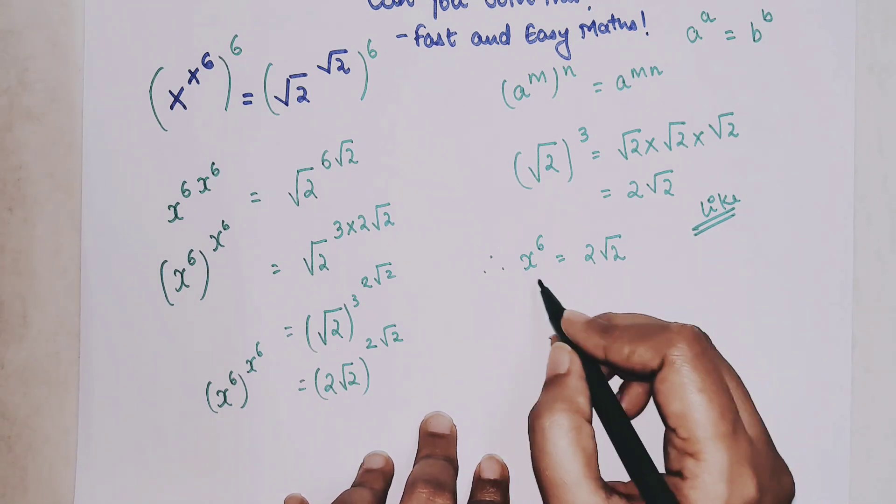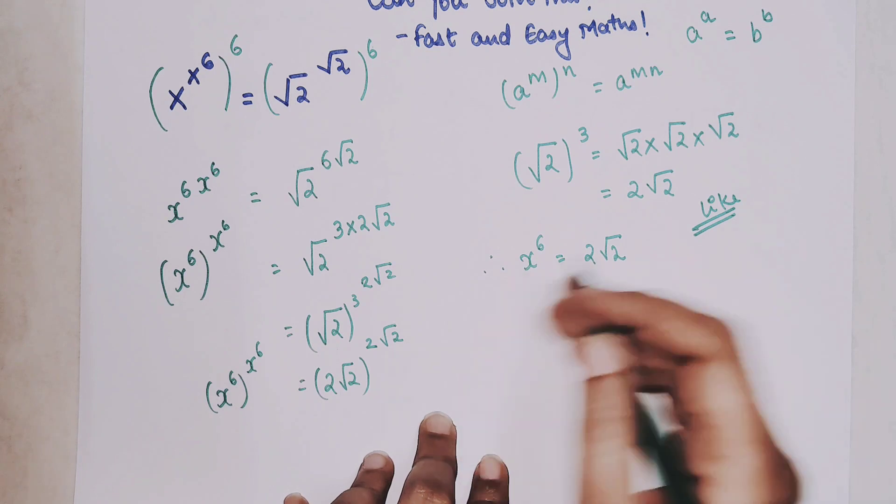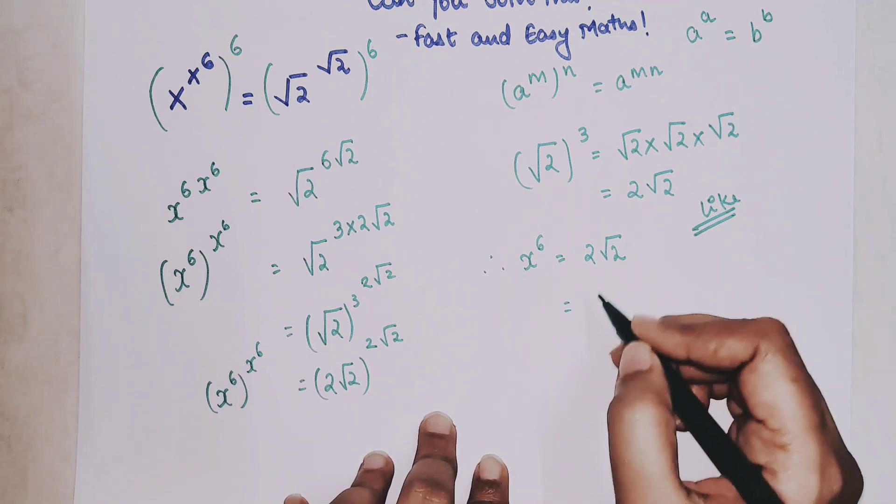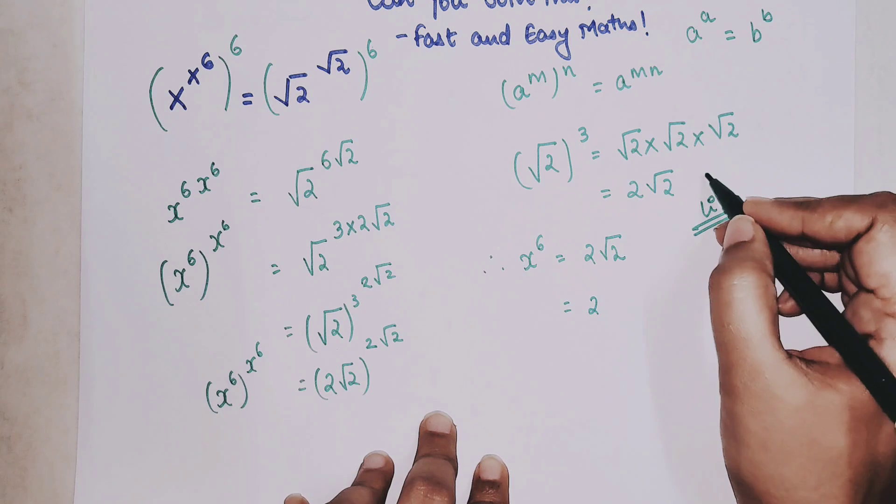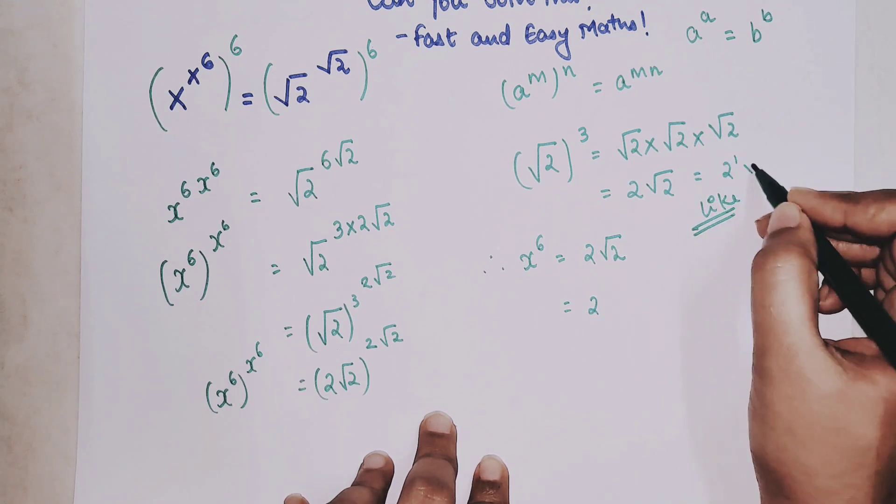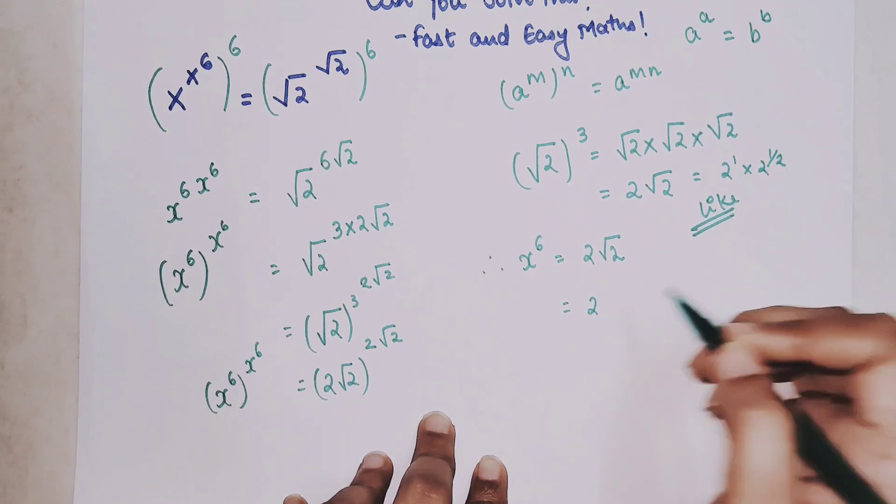Now please understand taking the 6th root, before taking the 6th root on this side we will first write this as 2 raised to, this 2 root 2 can be written as 2 raise to 1 into 2 raise to half.